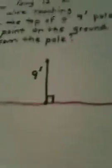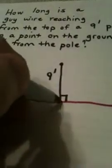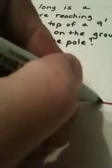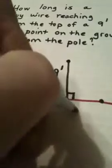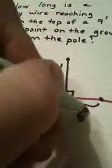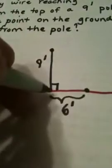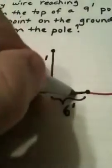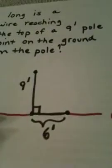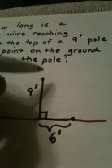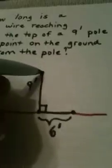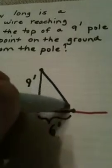We're picking a point on the ground six feet from the pole, so let's say I measure from here. This is six feet from the base of the pole. How long is a wire reaching from the top of the pole down to this point on the ground? I want to know this length.